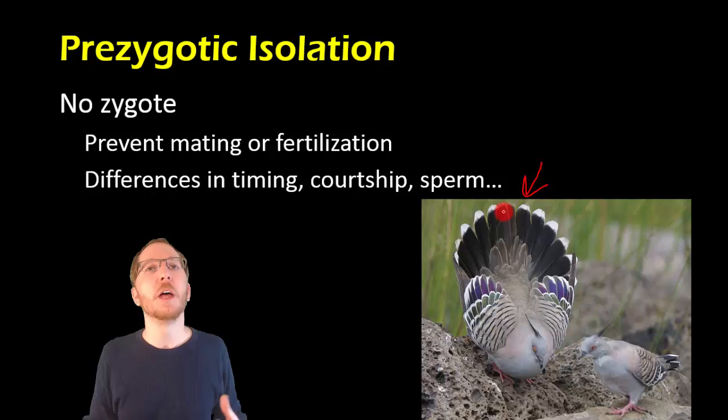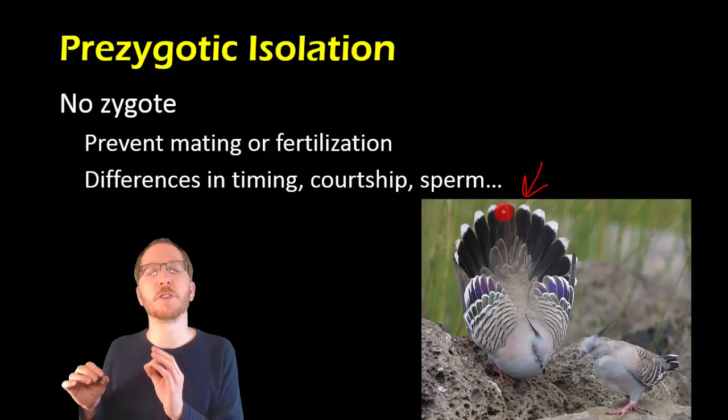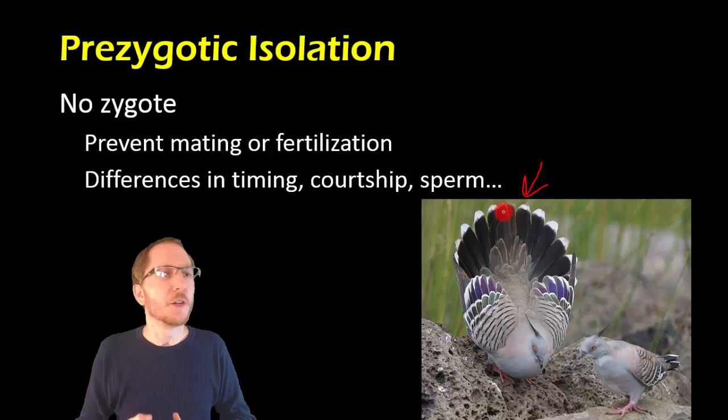It could be differing the time at which you reproduce. Maybe one reproduces in the spring, a different species of the similar type is going to reproduce in the fall. And so ultimately, you guys never actually line up in terms of reproduction.